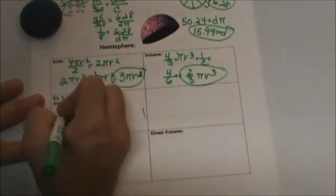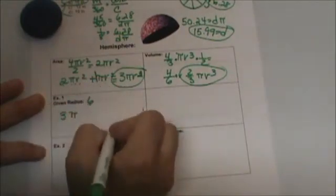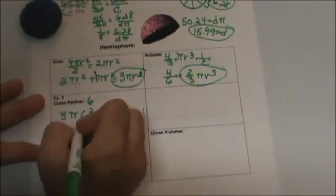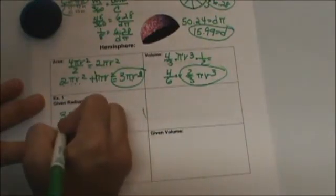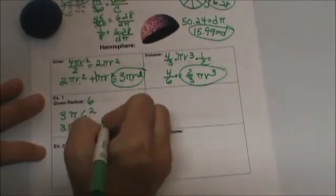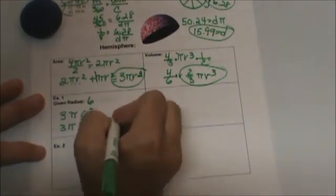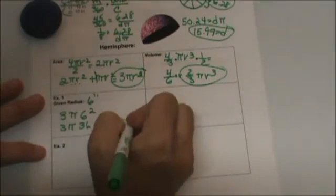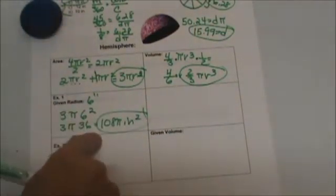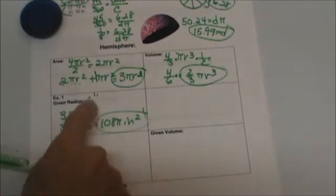So the surface area is going to be 3 pi times the radius which is 6 squared. 6 squared is 36. So 3 times pi times 36. 3 times 36 is what? 108. 108 pi. And we'll make that inches. Inches squared. So that's how you would find the surface area given just the radius.